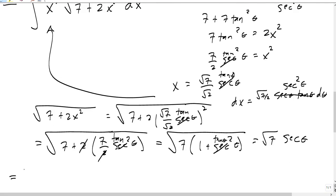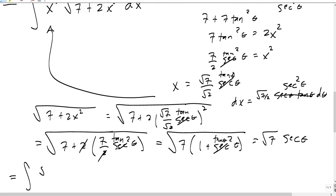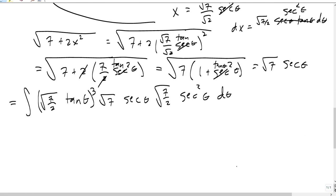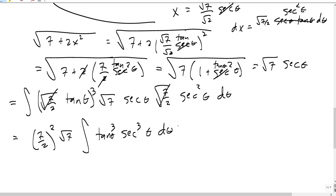So x cubed becomes root 7 over root 2 tangent of theta, the whole thing cubed. The square root turns into root 7 secant of theta, and dx becomes root 7 over root 2 secant squared of theta d theta. Collecting all the constants, you get 7 over 2 to the 3/2 power times another factor for 7, giving something like 49 root 7 over 4. Then the trig integral is tangent cubed of theta times secant cubed of theta d theta. How awful is that?